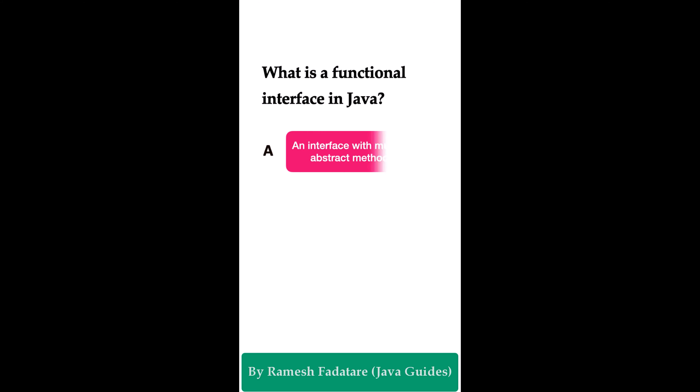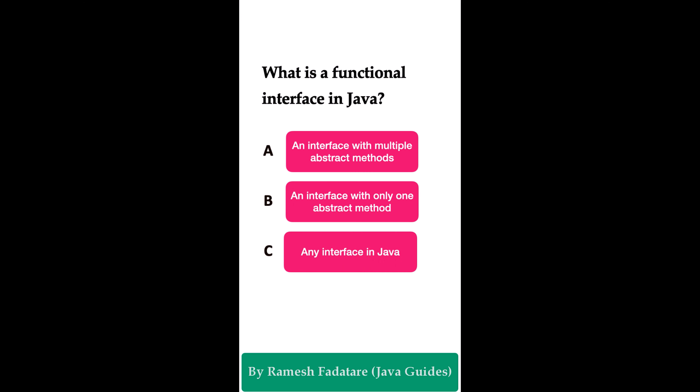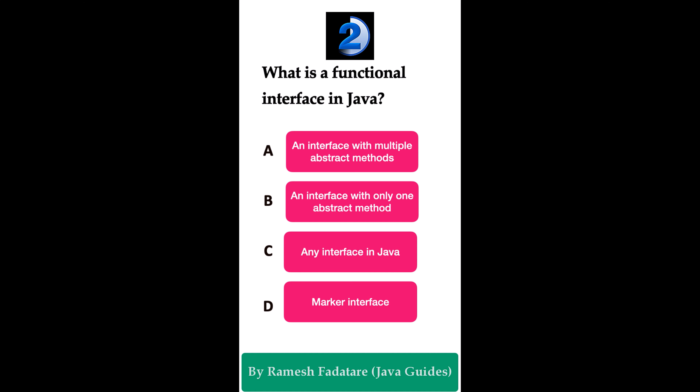What is a functional interface in Java? Option A: an interface with multiple abstract methods. Option B: an interface with only one abstract method. Option C: any interface in Java. Option D: a marker interface. The correct answer is option B. A functional interface contains exactly one abstract method. It can have any number of default or static methods but only one abstract method. To create a functional interface, define an interface with a single abstract method and annotate it with @FunctionalInterface. We use lambda expressions to implement functional interfaces.